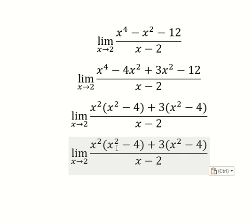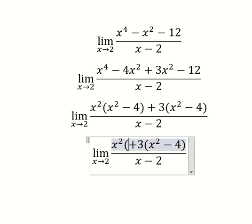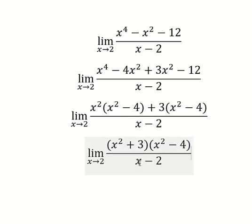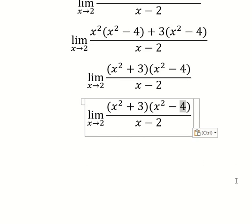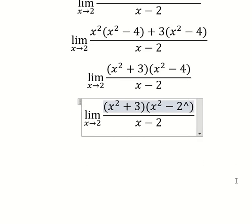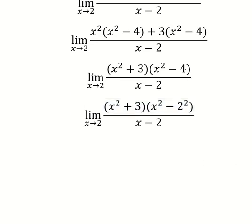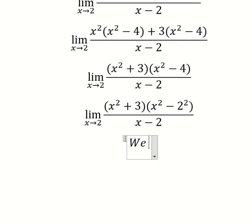Next, x squared minus 4 - we can do another factorization. Notice that 4 is 2 to the power of 2, so we have the difference of squares formula here.